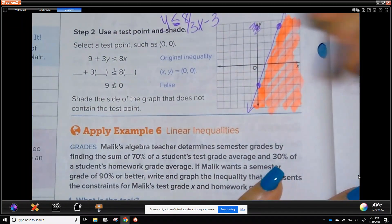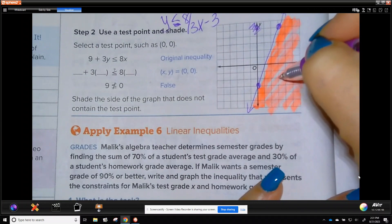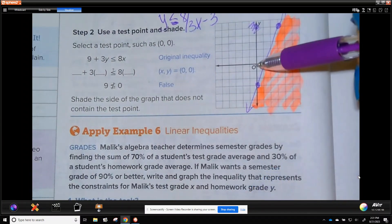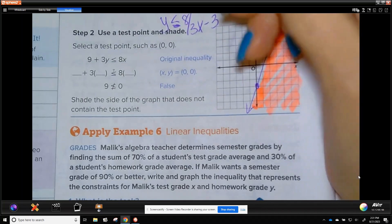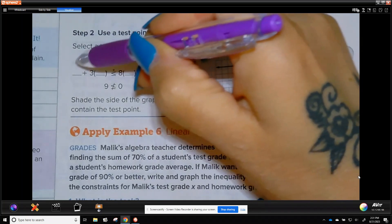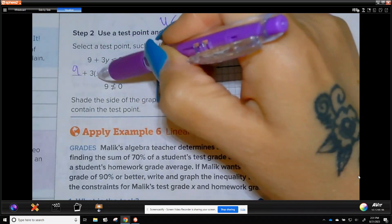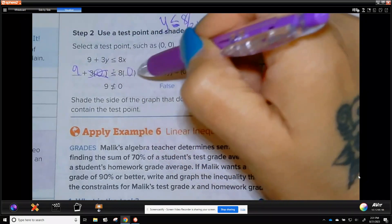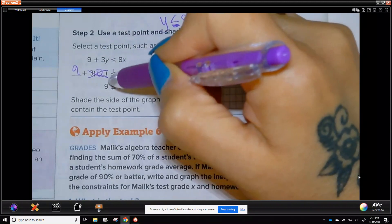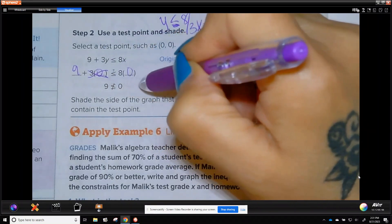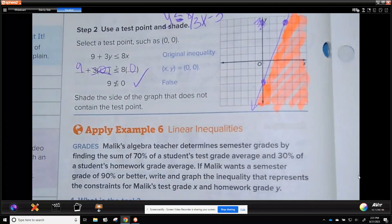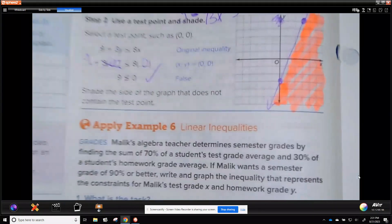Now, 0, 0 is not within our solution. So, if I plug in 0, 0, it should not be true. So, I'm going to plug in 9 plus 3 times 0 is like 8 times 0. So, this goes away, and this is just 0. So, 9 is less than 0, false, and it's not shaded, so we are good. All right. That is it for Lesson 5.